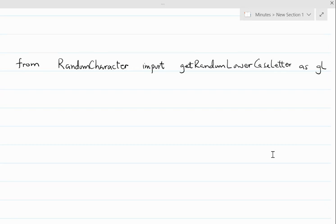I realized that getRandomLowerCaseLetter is a very long word so we can replace that with just gl. So we are importing from RandomCharacter and we are specifically importing getRandomLowerCaseLetter but we are giving it a nickname of gl so that anytime you call gl it would be the same as getRandomLowerCaseLetter because that is a very long word.